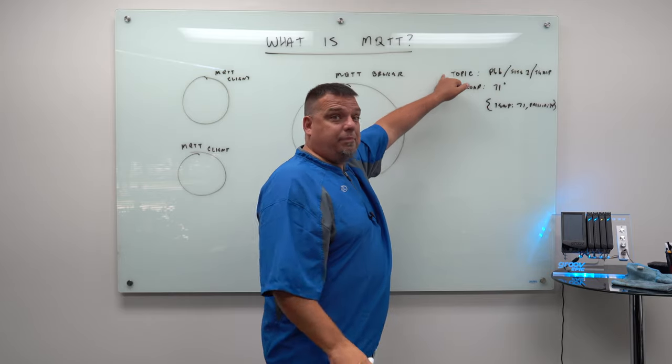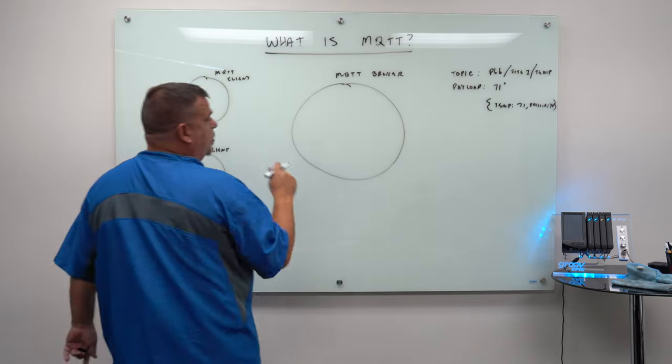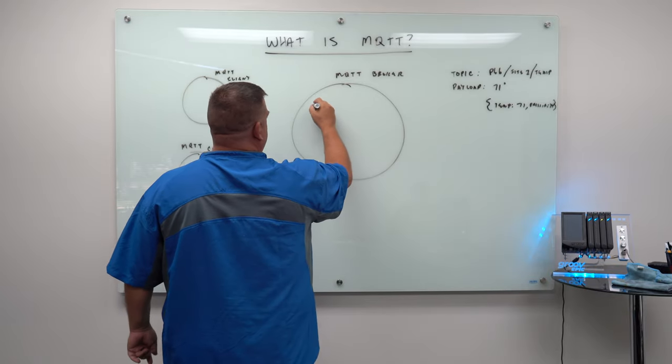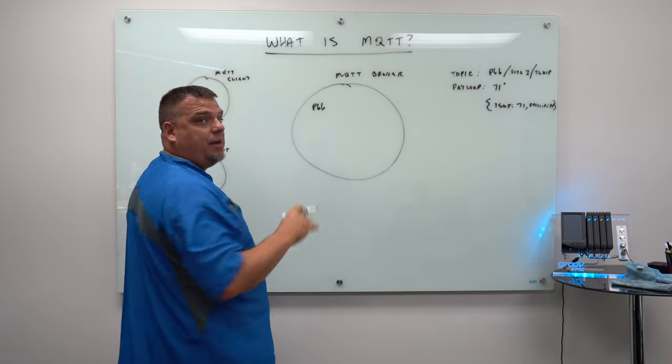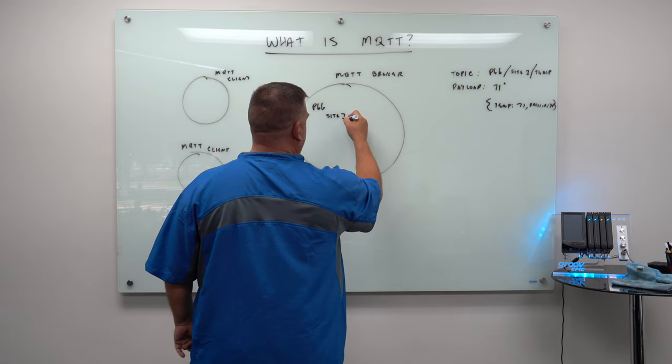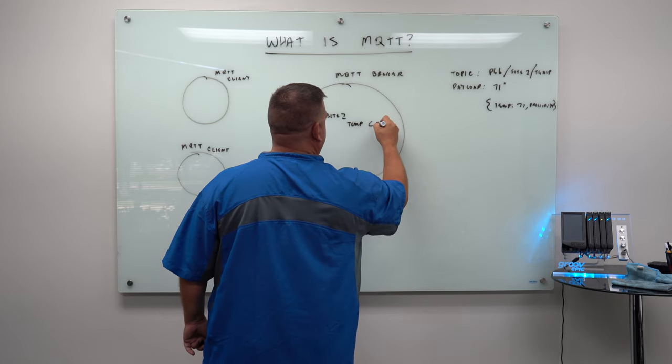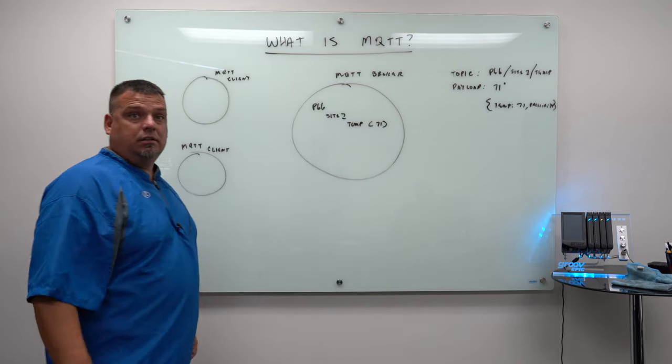So in a nutshell, the way MQTT is, is I have a topic and I have a payload. So what they did, what they do is they created broker technology that organizes all the data in a topic namespace. So P66 site one, and then under site one, I have a topic called temp. And if I look at it, the value right now would be 71.